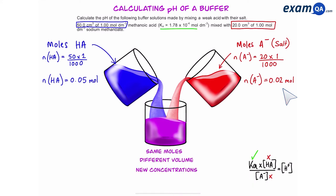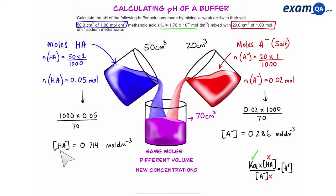However these moles are being mixed into a beaker. So when they get mixed the HA and A- won't react with each other so their moles will be the same. However because the beaker is a larger volume that means the concentration of HA and A- will change. So the total volume of the buffer is going to be 70 centimeters cubed. That means we're going to convert the moles that we've calculated into concentration once again. However we're going to use the total volume this time.